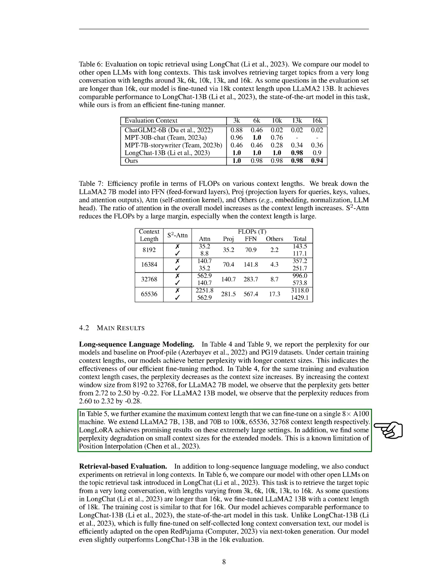We also examined the maximum context length that we can fine-tune on a single machine with 8 A100 GPUs. We extended LLaMA-2 7B, 13B, and 70B to 100K, 65,536, and 32,768 context lengths respectively. LongLoRA achieved promising results on these extremely large settings. However, we noticed some perplexity degradation on small context sizes for the extended models, which is a known limitation of position interpolation.